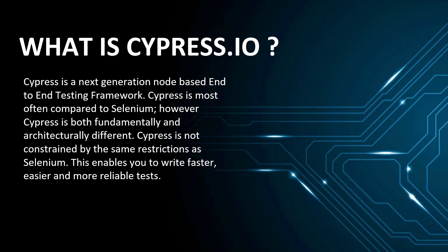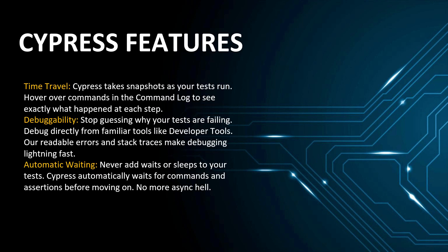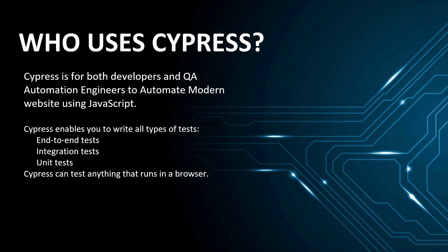You can write more reliable tests because you're sitting inside the browser instead of using APIs to automate your web applications. Cypress is for both developers and QA automation engineers. You can do end-to-end tests, integration tests, and unit tests with a single framework, and you can automate anything that runs in the browser.